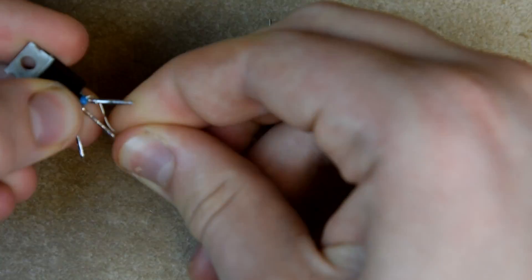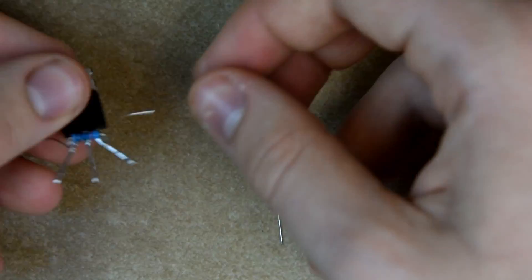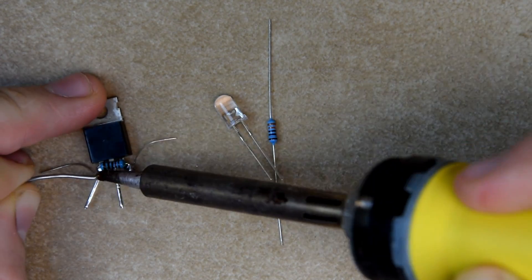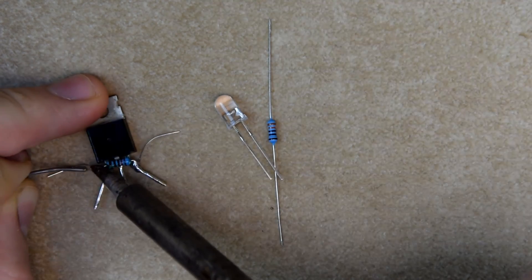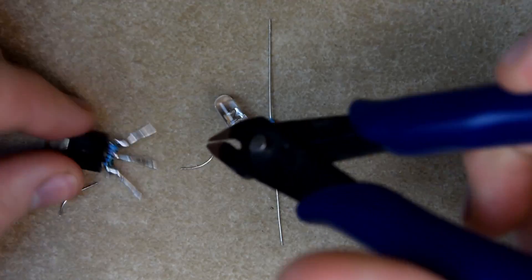Next, we place the resistor between the source and gate of the MOSFET to ensure it stays off without the signal applied. We trim the leads and get the cable to the iron.